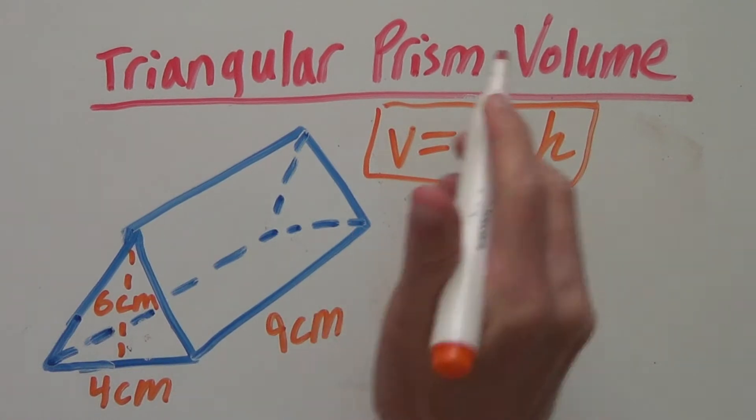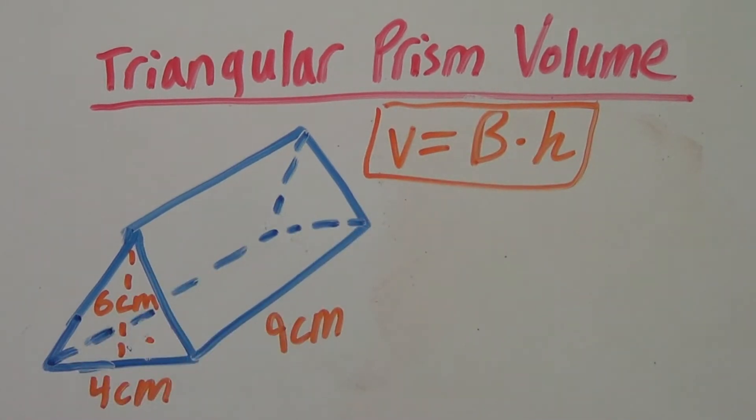Number one, base is this triangle here. A lot of students think that it is this rectangle since when you see the triangular prism positioned like this, the rectangle is on bottom.